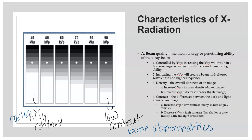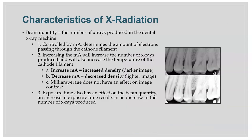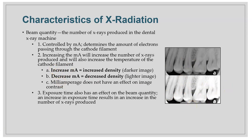With mA, increasing milliamperage gives a darker image. Think of baking a cake — increasing oven temperature darkens the cake. Decreasing temperature gives a lighter cake. Same with mA: decrease for lighter, increase for darker.